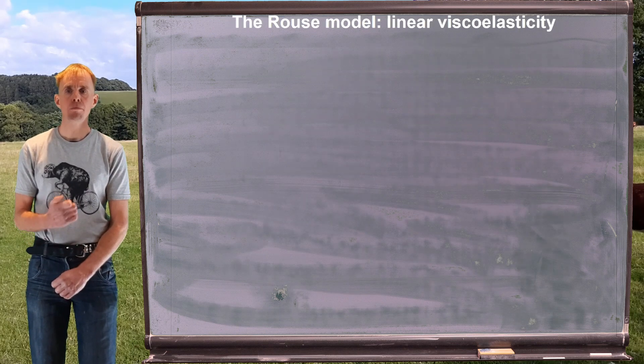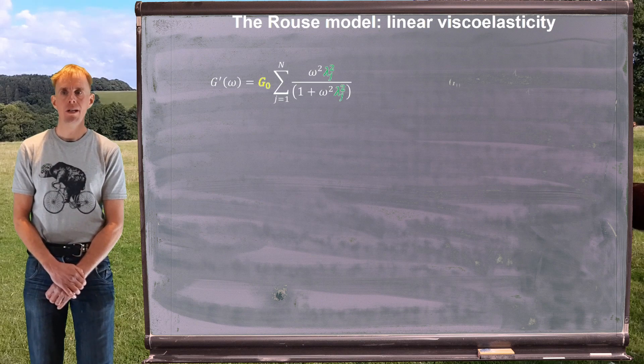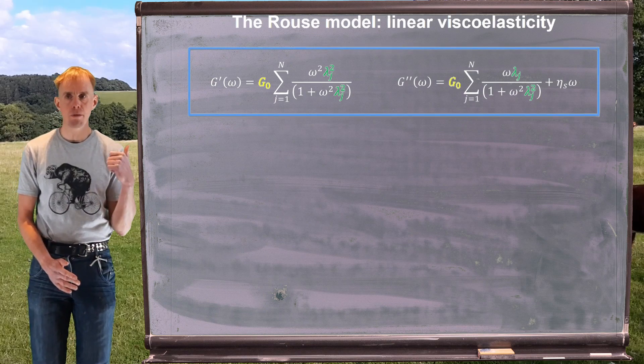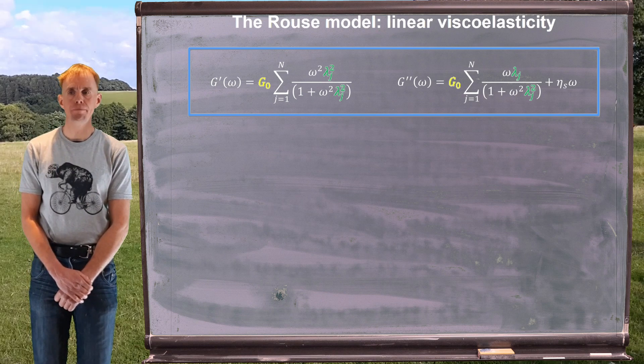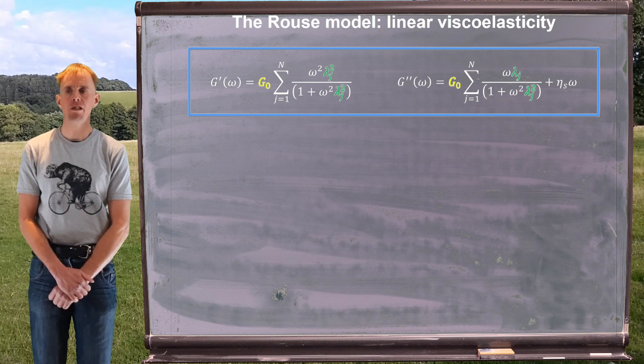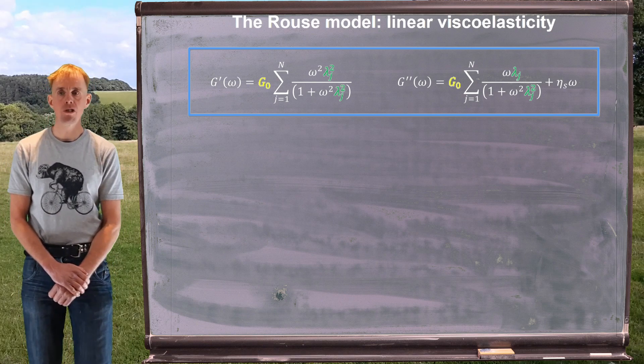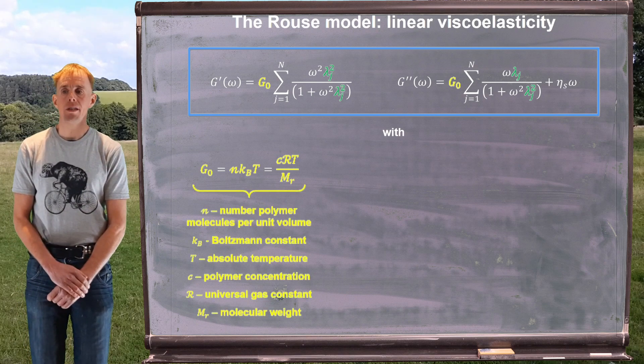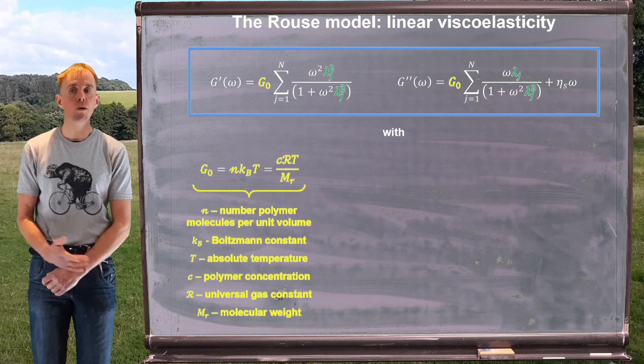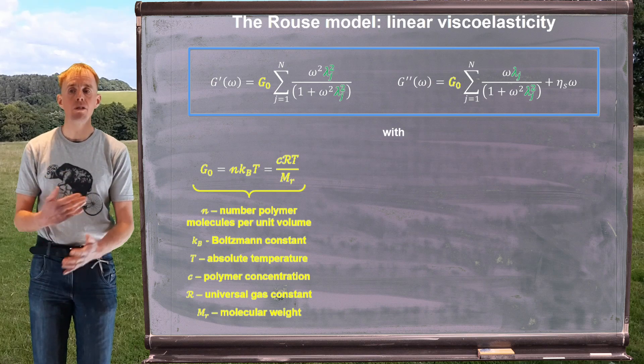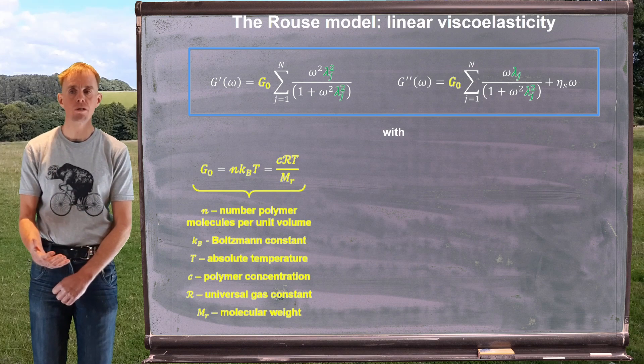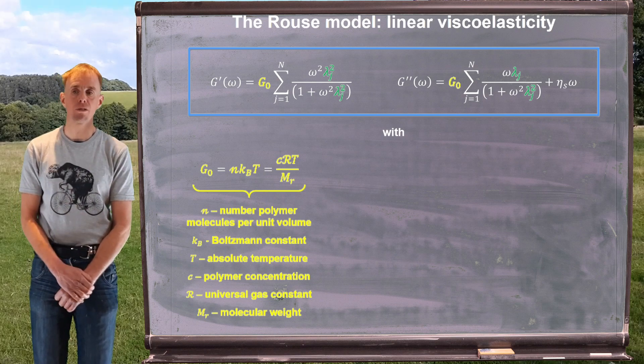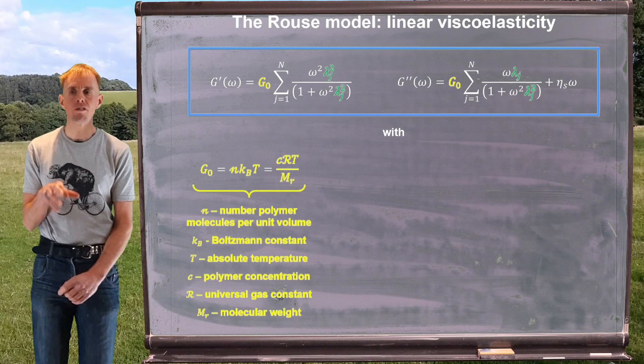The Rouse model predicts linear viscoelasticity. Let me put two key equations on the board for you. One that describes the elastic modulus G' and one that describes the viscous modulus G''. I've highlighted a few parameters in these equations. Firstly, G₀, which is a modulus. G₀ here is dependent on the number of polymer molecules per unit volume, the Boltzmann constant and the temperature. We can rework that into being a concentration dependence, a molecular weight dependence, and then RT where R is the universal gas constant, T is absolute temperature. So that's what makes up G₀.